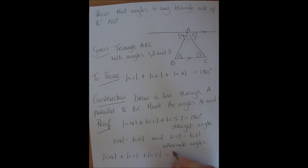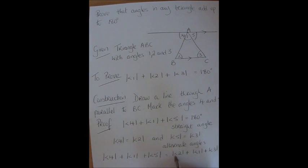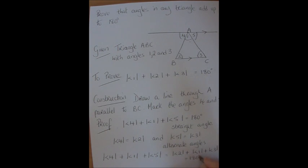Now the 4 is equal to the 2, so I'm going to write that instead of it. So I'm replacing it or substituting it. I'm going to leave the 1 the same because it belongs inside the triangle. And instead of 5 I'm writing 3 because they're equal. So 2, 1 and 3 also equal 180 degrees.